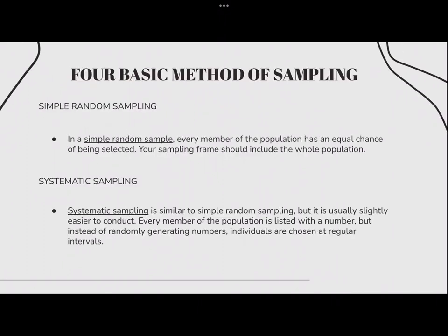Now let's proceed to the four basic methods of sampling. First, we have simple random sampling. In simple random sampling, every member of the population has an equal chance of being selected, and your sample frame should include the whole population. To conduct this type of sampling, you can use tools like random number generators or other techniques based entirely on chance. For example, you want to select a simple random sample of 100 employees of company X — you assign a number to every employee in the company database from 1 to 1,000 and use a random number generator to select 100 numbers.